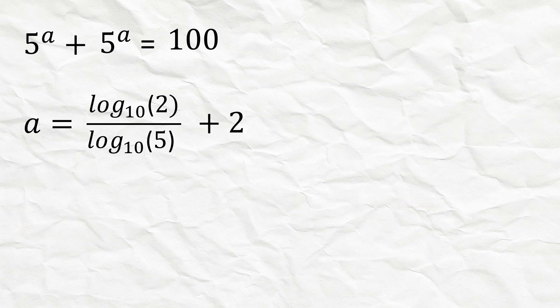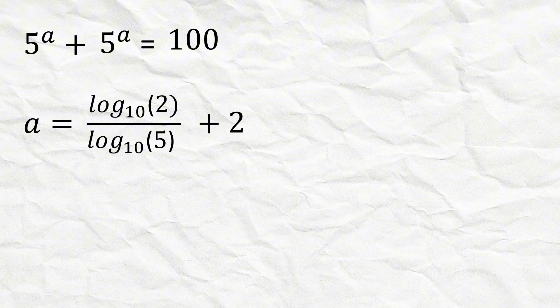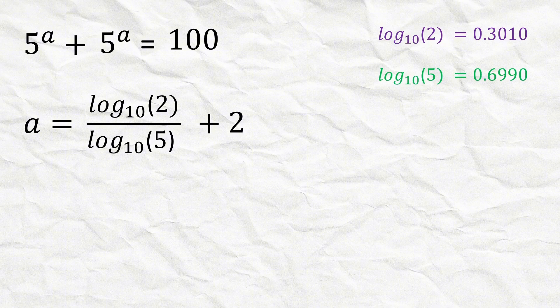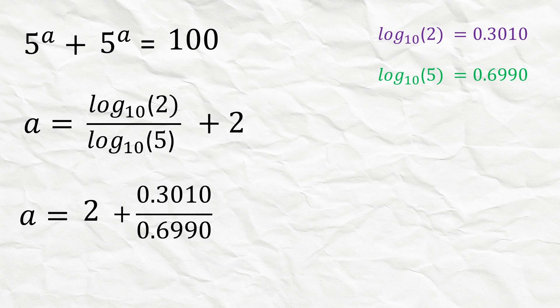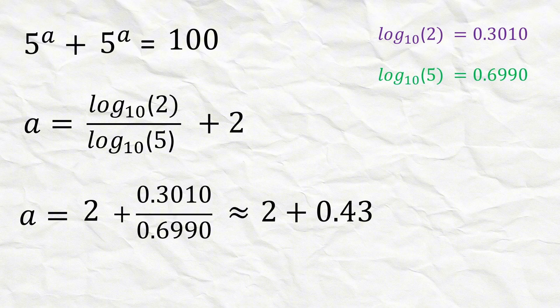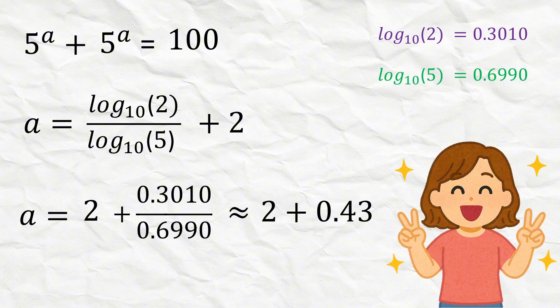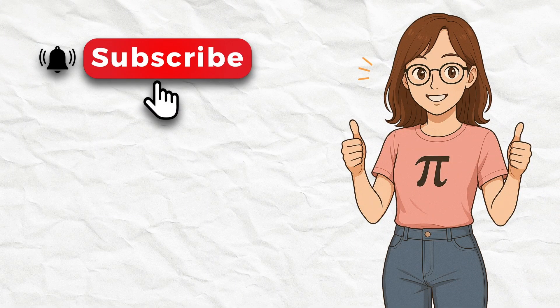Using calculator values, log 2 equals 0.3010 and log 5 equals 0.6990, so a equals 2 plus 0.3010 over 0.6990, which equals 2 plus 0.43. Therefore the final value of a is approximately 2.43, and that is good.